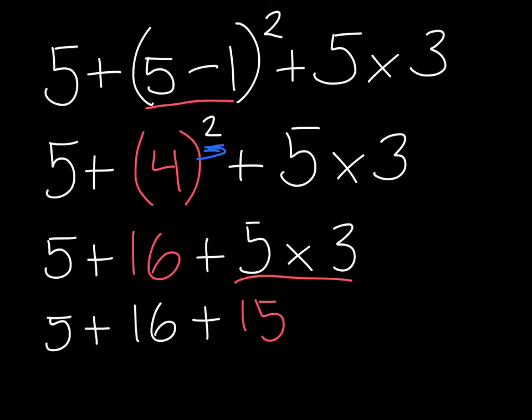Now I'm almost done because I'm down to my addition and subtraction and as you can see I have no subtraction. I do have two steps of addition and when I do have that I just do them in the order I see them from left to right. So I have five plus sixteen which I'll do first plus fifteen. I can write it all in one go if I want. I can simply say five plus sixteen is twenty-one plus fifteen is thirty-six. Or I can say five plus sixteen is twenty-one. And twenty-one plus fifteen equals thirty-six.